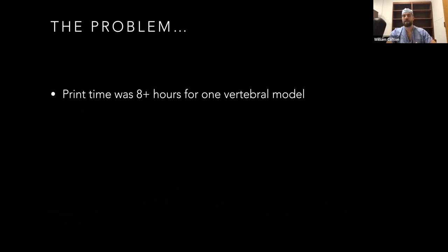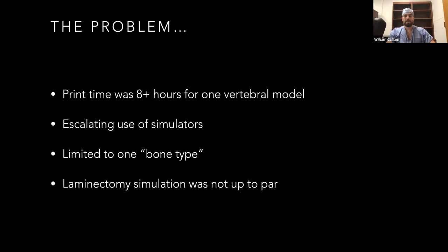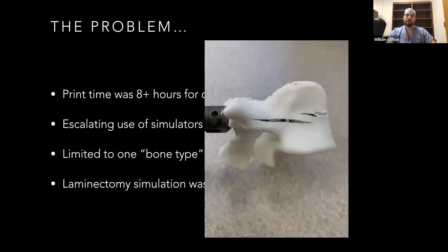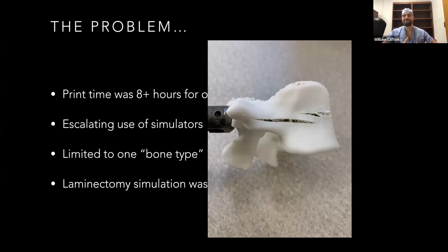Polylactic acid has similar shore hardness and mechanical properties as cancellous bone. Polyvinyl alcohol is pretty bendy and flexible. We were just basing it on density differences. You could actually x-ray it and see where you put in the screws — it worked pretty well. We started using that for a while and residents came over to learn. The problem was the print time was really long — about eight hours for one vertebral model. It was also limited to just one bone type, so I couldn't simulate osteoporotic, hard, or pediatric bone. And the laminectomy simulation would crack every time you tried to burr through it, and when the pedicle screw went in, the whole vertebral model would just crack all the way through.